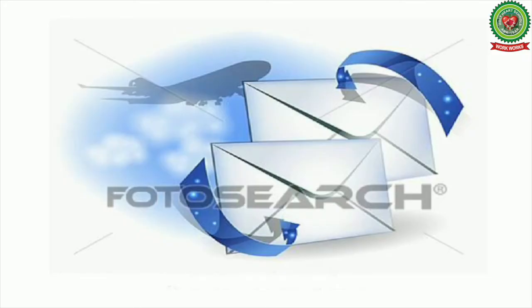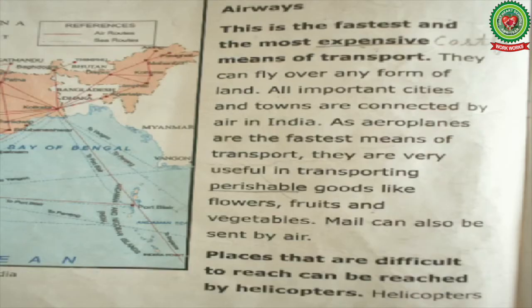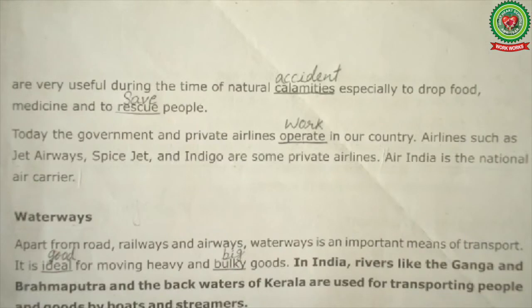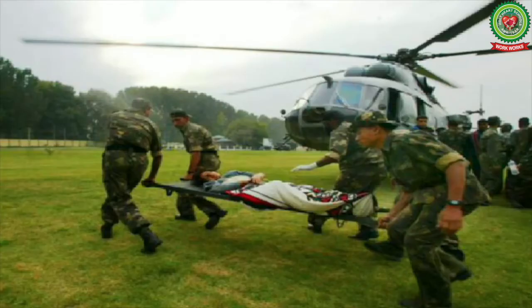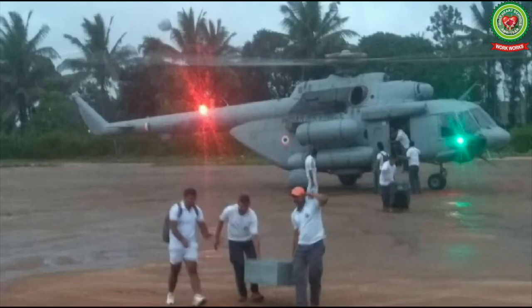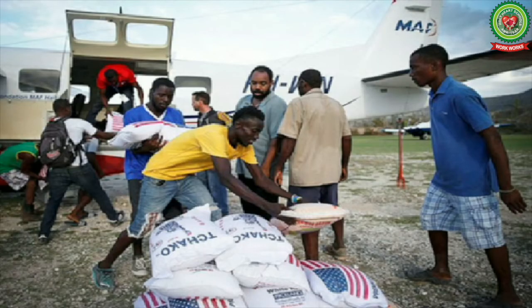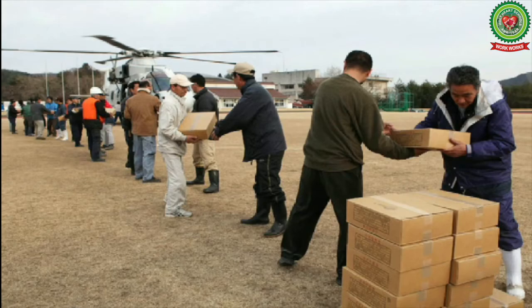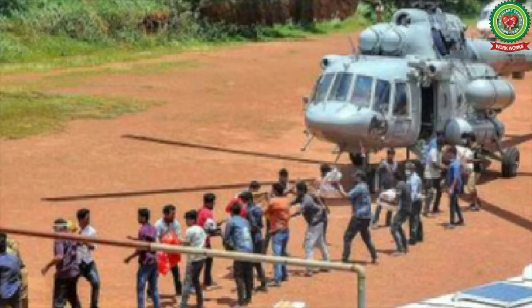Come to the second paragraph of airways. Places that are difficult to reach can be reached by helicopters. Helicopters are very useful during the time of natural calamities, especially to drop food and medicine and to rescue people. Underline 'calamities' and write 'accident'; underline 'rescue' and write 'save'. This means airways transport is possible even at places where other modes of transport are impossible.